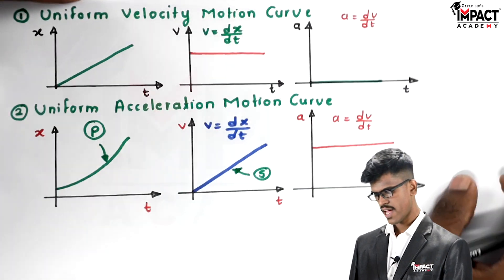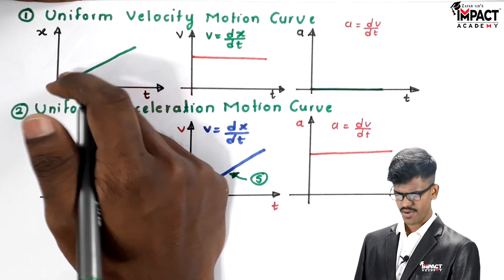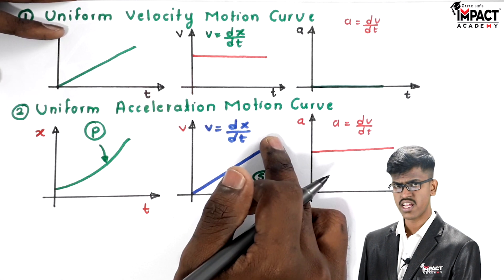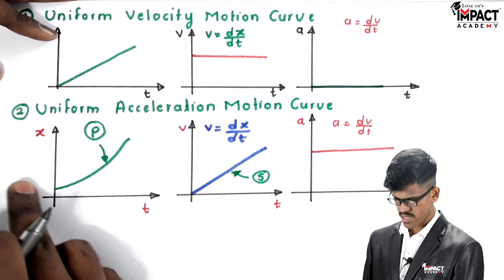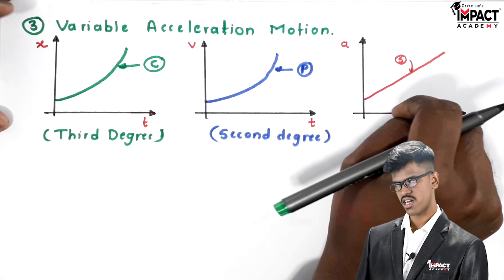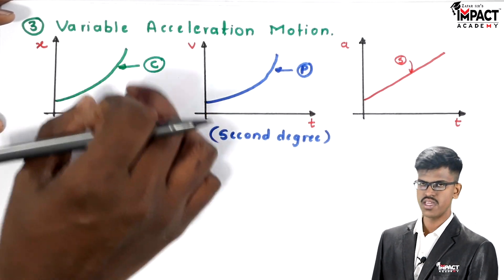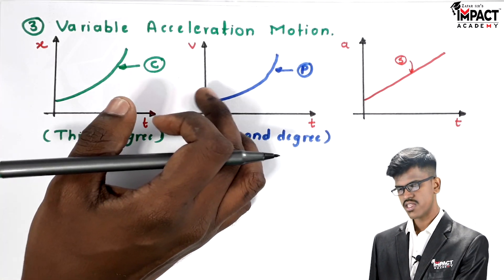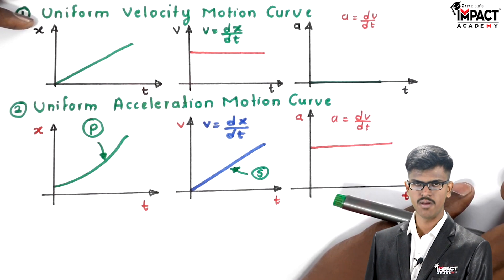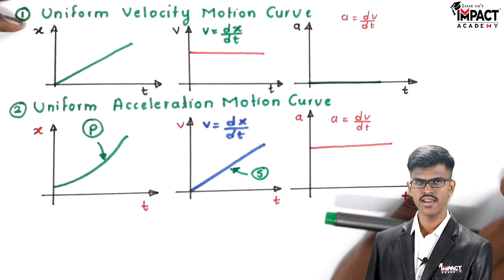To summarize: if the acceleration is zero, the velocity is a straight line parallel to the x-axis and displacement is an inclined straight line. If the acceleration is constant, then velocity will be an inclined straight line and the displacement curve will be parabolic in nature. If the acceleration is variable and linear, the displacement curve will be cubic in nature. Keep these points in mind while solving problems. This is the end, thank you.